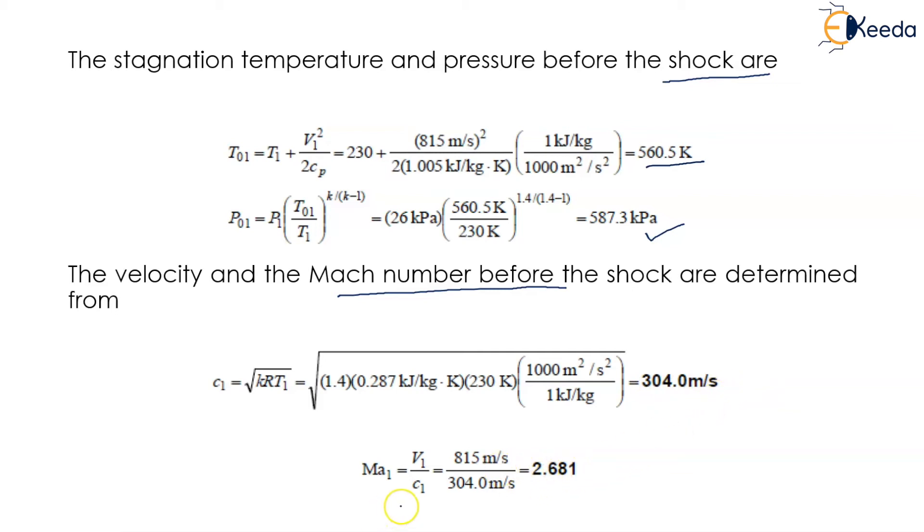The Mach number MA1 = V1/C1, which is 815 divided by 304, equals 2.681.